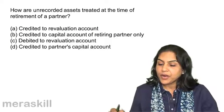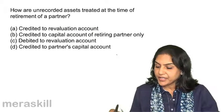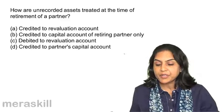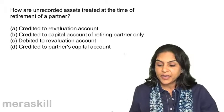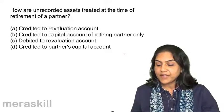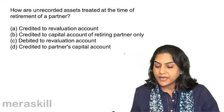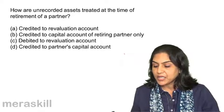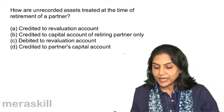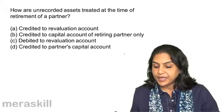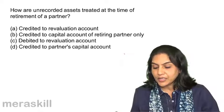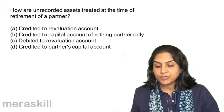How are unrecorded assets treated at the time of retirement of a partner? A: Credited to the revaluation account. B: Credited to capital account of retiring partner only. C: Debited to the revaluation account. D: Credited to partner's capital account.